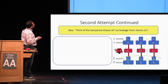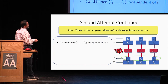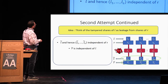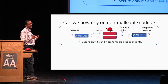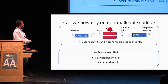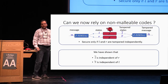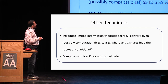This idea allows us to get non-malleability from the other side. The key is to think of the tampered shares of L as leakage from the shares of R. This allows us to conclude that L-tilde does not depend on R. We have already concluded that R-tilde is independent of L. So now we get non-malleability in both directions.